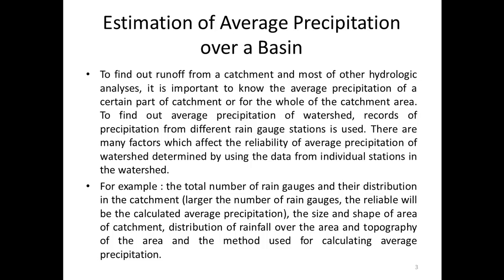For example: the total number of rain gauges and their distribution in the catchment — the larger the number of rain gauges, the more reliable will be the calculated average precipitation. Also important are the size and shape of the catchment area, distribution of rainfall over the area, topography of the area, and the method used for calculating average precipitation.